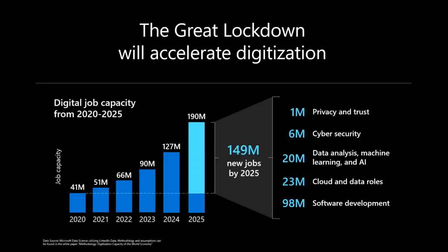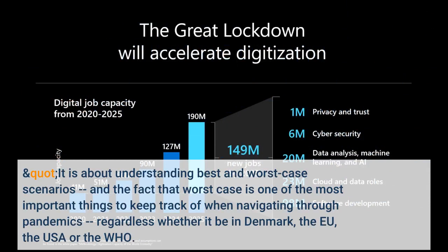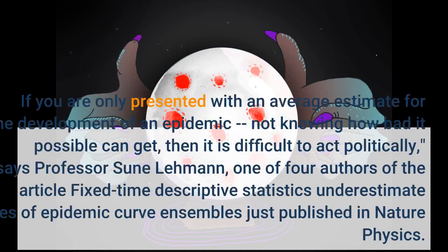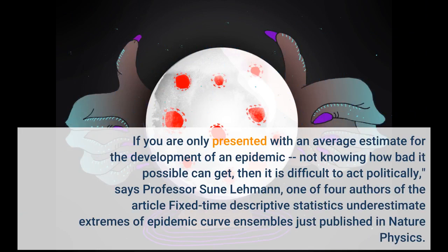It is about understanding best-and-worst-case scenarios, and the fact that worst-case is one of the most important things to keep track of when navigating through pandemics, regardless whether it be in Denmark, the EU, the USA, or the WHO. If you are only presented with an average estimate for the development of an epidemic, not knowing how bad it can possibly get, then it is difficult to act politically, says Professor Sunay Lehman.